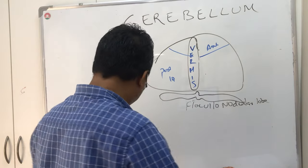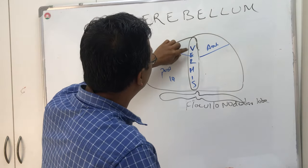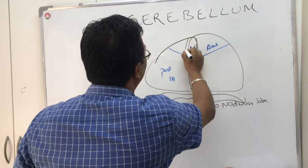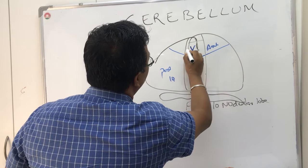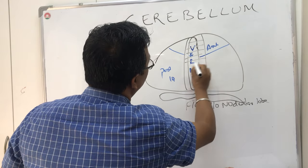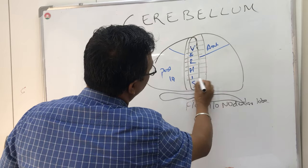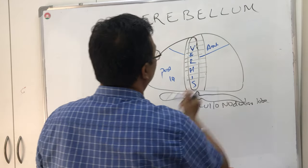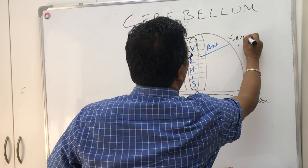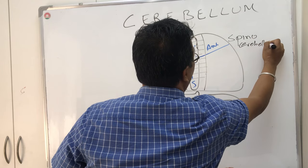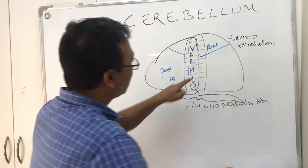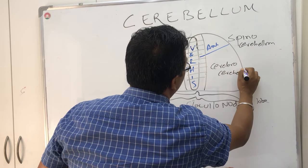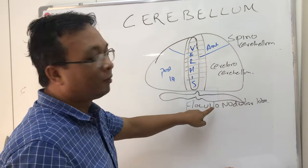Functionally, the cerebellum is also divided into three parts. This part is called the spinocerebellum, this part is called the cerebrocerebellum, and this part is called the vestibulocerebellum.